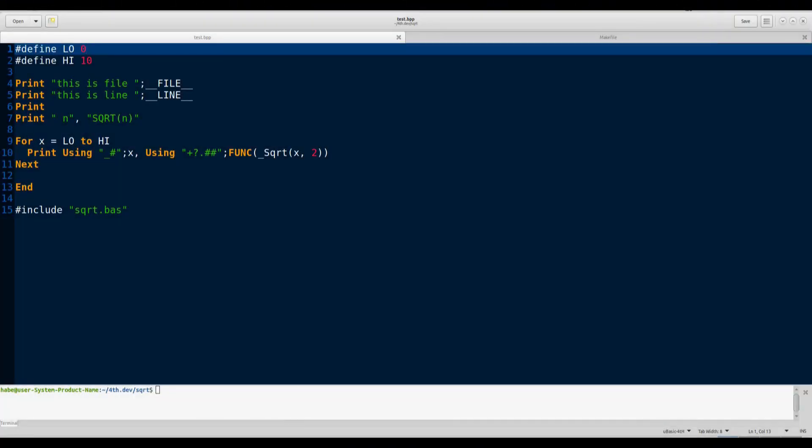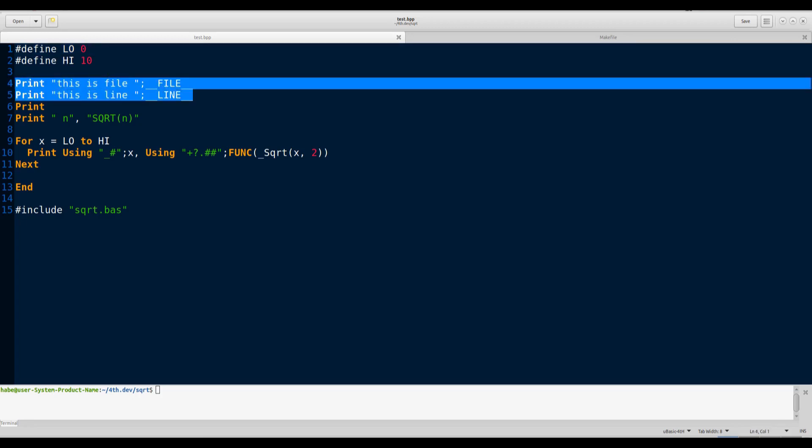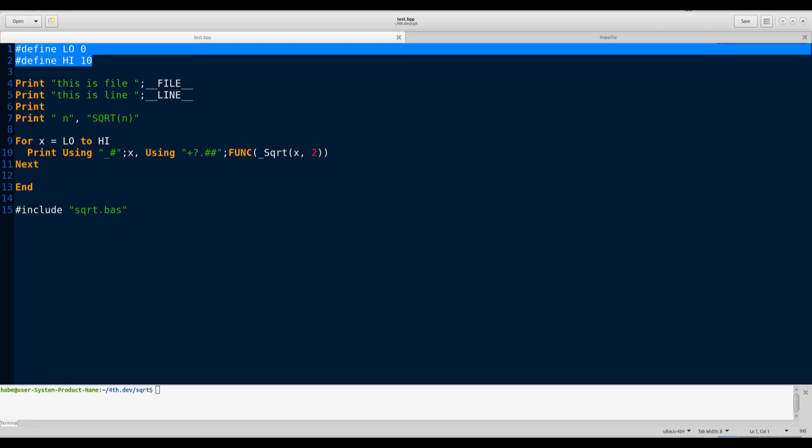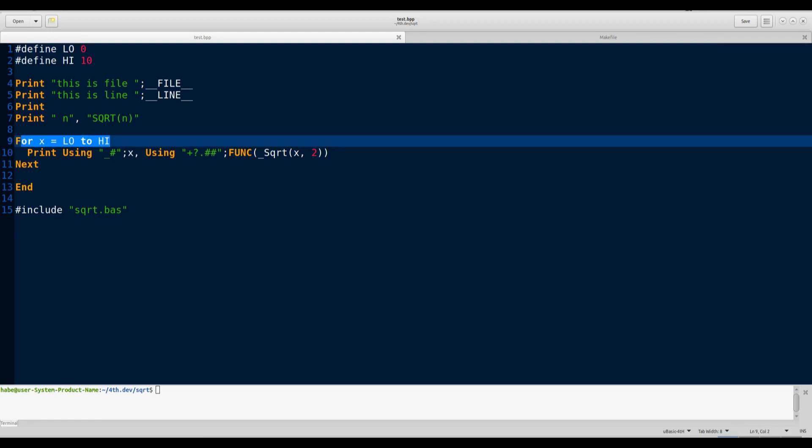But what makes this interesting is that some of these constants aren't built in. Underscore file, underscore line, yeah, but those are built in. But low and high? No, these are defined. And that's something the simple preprocessor from the previous episode cannot do.